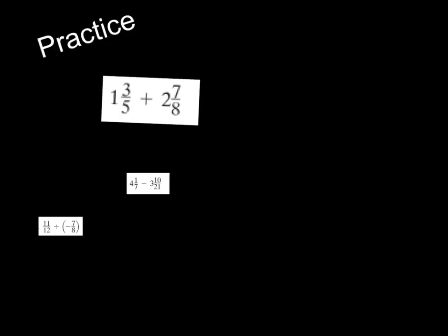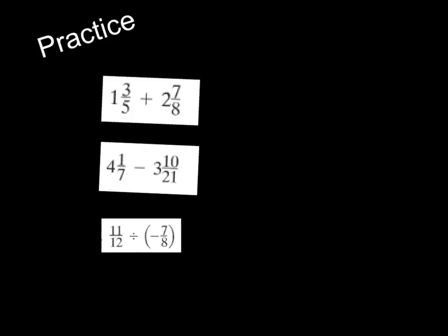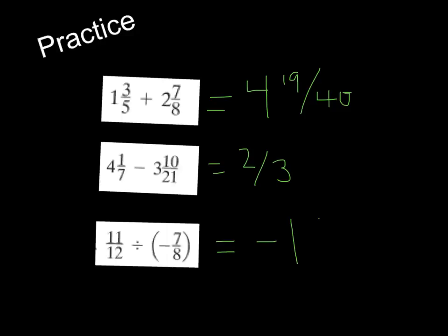It's your turn to do the practice. You have 3 problems: 1 and 3 fifths plus 2 and 7 eighths; 4 and 1 seventh minus 3 and 10 twenty-firsts; and 11 twelfths divided by negative 7 eighths. Pause the video and check back when you're done. The answers are: 4 and 19 fortieths; two-thirds; and negative 1 and 1 twenty-first. Always reduce and simplify.